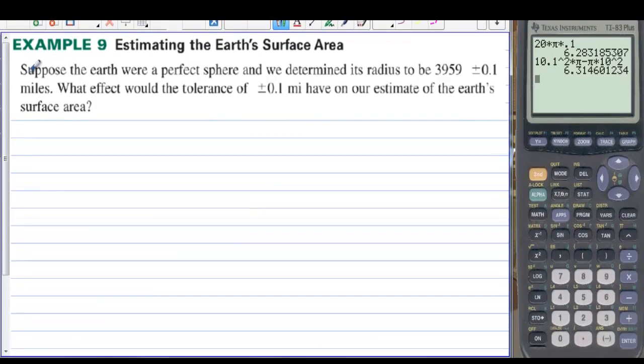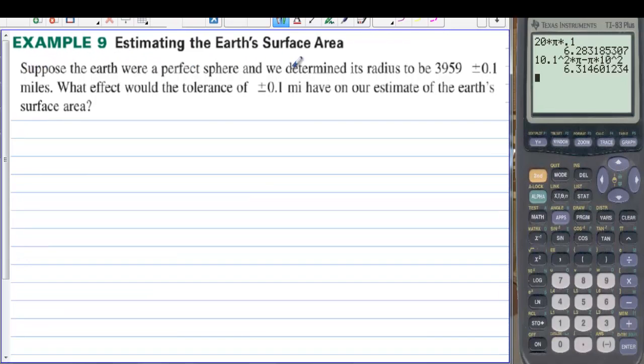Estimating the Earth's surface area. Suppose the Earth were a perfect sphere and we determined its radius to be 3,959 plus or minus .1 miles. What effect would the tolerance of plus or minus .1 miles have on our estimate of the Earth's surface area?